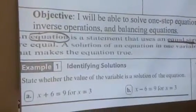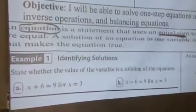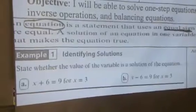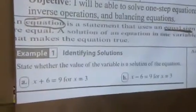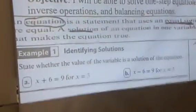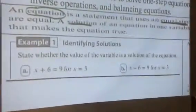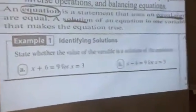An equation is a statement that uses an equal sign to show that two quantities are equal. A solution of an equation — solution is your key word — is a value that makes the equation true. So an equation has an equal sign, and a solution is a value that makes that equation true.